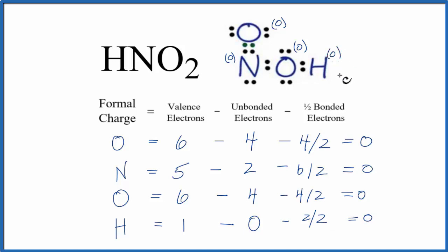So those are the formal charges for each of the atoms here in HNO2. And because they're all zero, we know that this is the most likely or best Lewis structure for HNO2. If we had a different arrangement of valence electrons, we probably wouldn't end up with zero formal charges for each element. This is Dr. B with the formal charges for HNO2 nitrous acid. Thanks for watching.